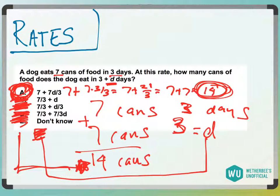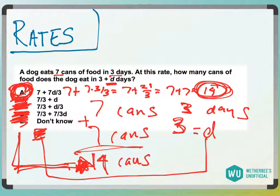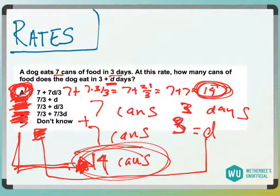So, again, I just assigned a number to D, which was three, which made it seven cans, added that up to 14, plugged in what I chose for my D, and whichever one produced the exact same number that I got from assigning the number to D is going to be the correct answer.